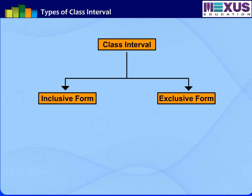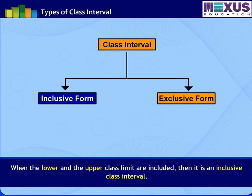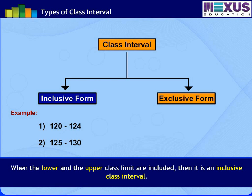Let us first understand about inclusive form. When the lower and the upper class limit are included in the class interval while grouping, then it is called an inclusive class interval. For example, in the first class interval 120 to 124, both the heights 120 as well as 124 are included. In the second class interval 125 to 130, both the heights 125 and 130 are included and so on. Hence, they are inclusive type of class intervals.